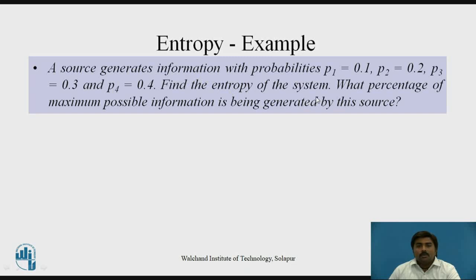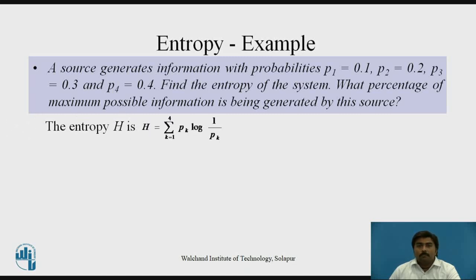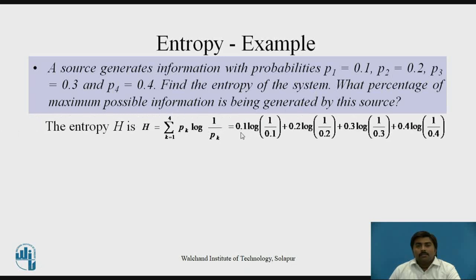The next question is: what percentage of maximum possible information is being generated by this source? We already studied the equation for entropy: H equals summation from k=1 to number of messages of probability times log(1/probability). In this case, the number of messages is 4. Putting in the values: 0.1·log(1/0.1) + 0.2·log(1/0.2) + 0.3·log(1/0.3) + 0.4·log(1/0.4), and the answer is 1.8464 bits per message.